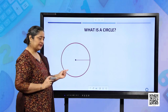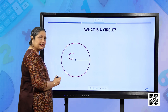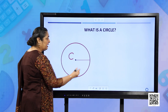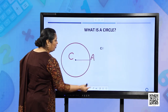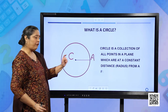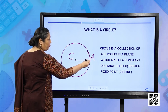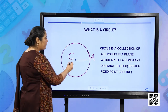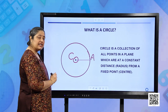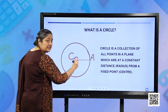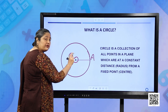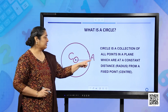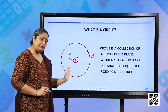This is a circle. Let me mark the center of the circle as C. This is any point on the circle, let me mark it as A. So, a circle is a collection of all the points in a plane which are at a constant distance from a fixed point — this fixed point is called the center of the circle, and the fixed distance CA is called the radius of the circle.